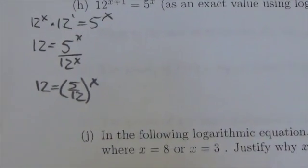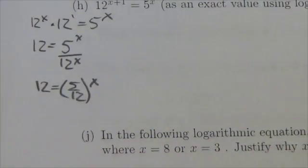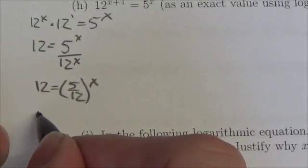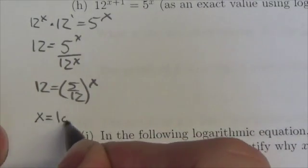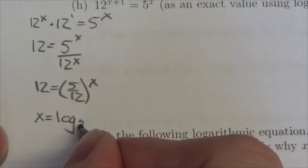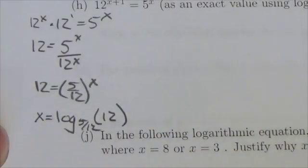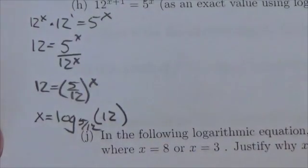Now all I got to do to get x by itself is to write this in logarithmic form because now it's just a very simple exponential. Okay so this would be x is equal to the log base 5 twelfths of 12 and that's my answer in exact form.